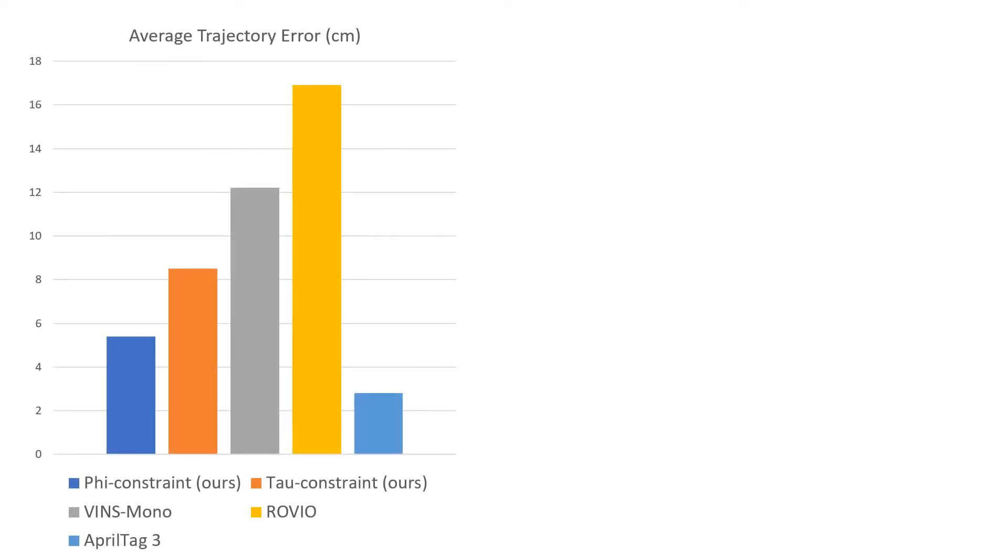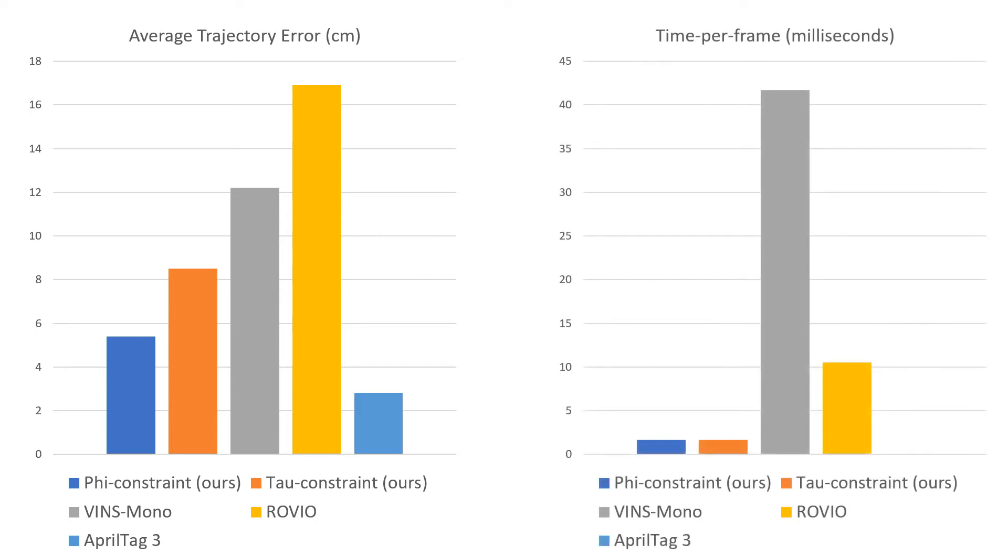Over 10 such sequences, our methods achieve a lower average trajectory error than Vins Mono and Rovio. Additionally, our method runs much faster.